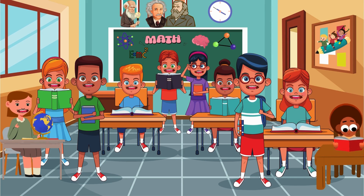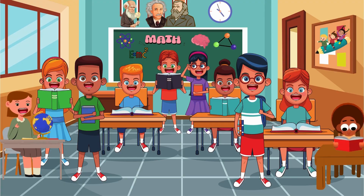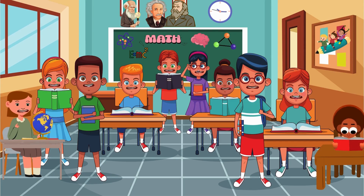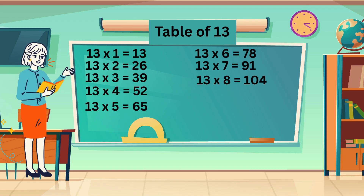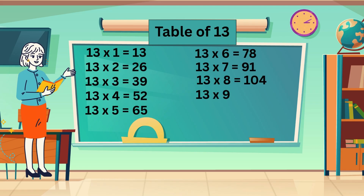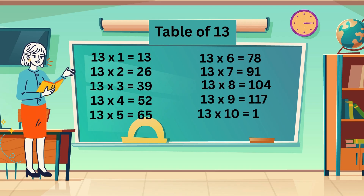13 sixes are 78. 13 sevens are 91. 13 eights are 104. 13 nines are 117. 13 tens are 130.